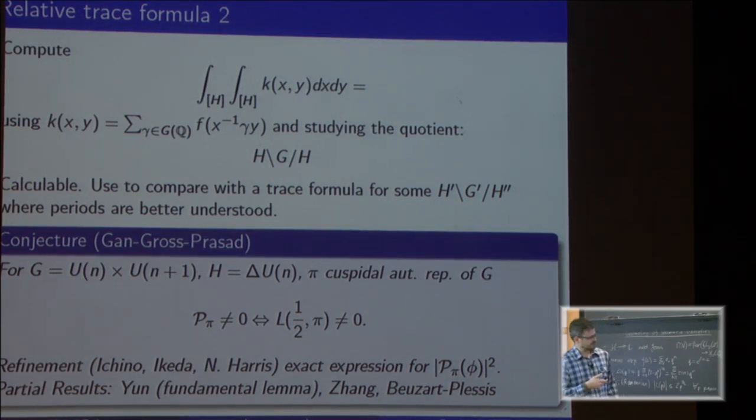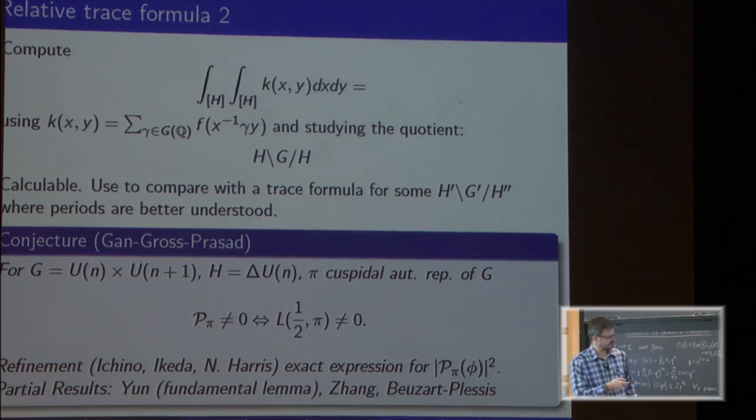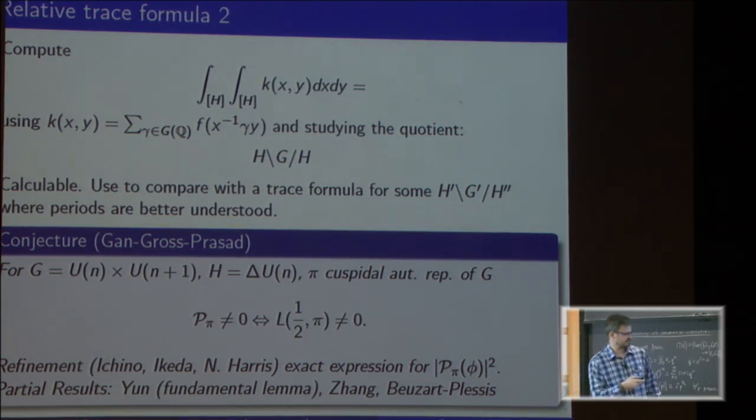We have such conjectures, but also Jacquet and Rallis proposed an approach, an attack on this conjecture using relative trace formula. This has been carried out, at least partially. Yifeng Liu proved the fundamental lemma. Consequently, Wei Zhang proved a substantial part of the conjecture, as well as some additional results by Beuzart-Plessis.